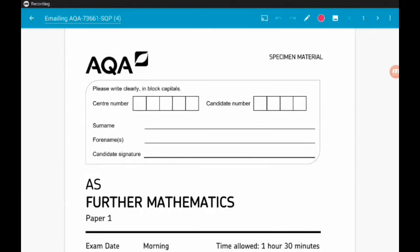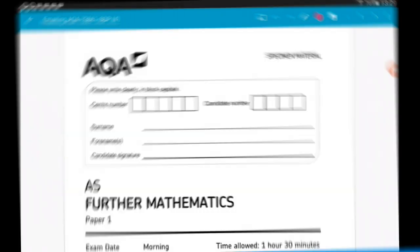Hey there guys, this is part 3 of AQA's AS Level Further Maths Specimen Paper 1. Here we're doing questions 9 and 10. Let's do this.